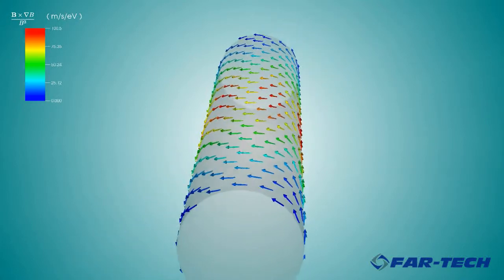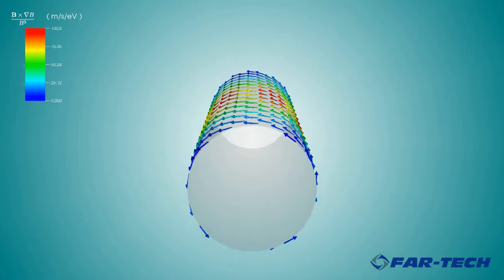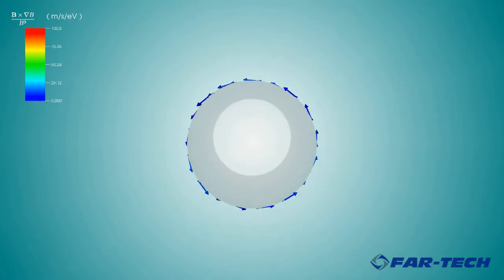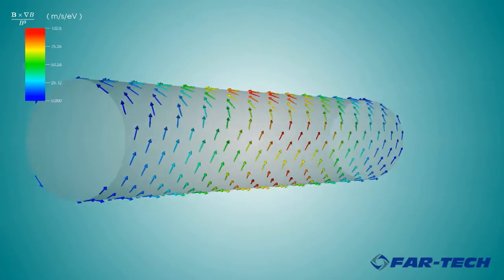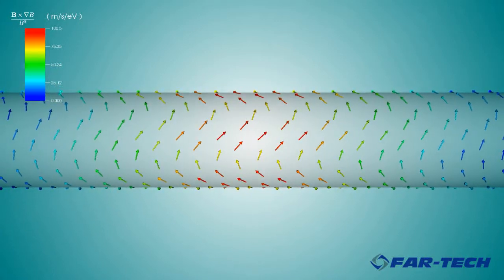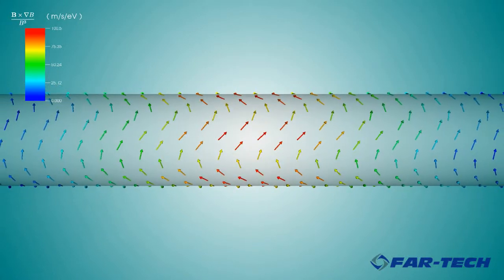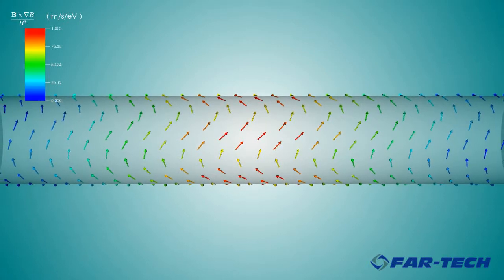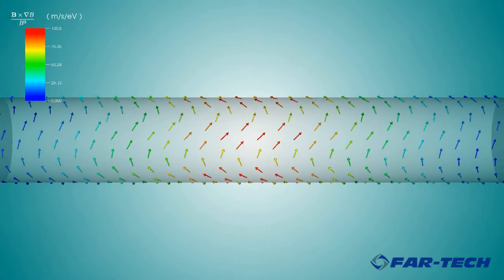Electron drift is proportional to this vector field for electrons about halfway to the wall. The arrows point in the direction of the drift and the colors show the relative speed of the drift. The greatest drift is near the midplane.